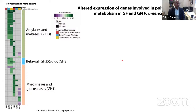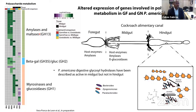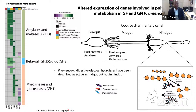At higher resolution, we see amylases, maltases, myrosinases, and glucosidases — which we would typically expect to be expressed primarily in the midguts — actually being expressed in the hindguts as well, which hadn't really been characterized before. This is interesting because it is in the hindgut where members of the Bacteroidetes and Firmicutes tend to be most abundant and are likely contributing to the production of short-chain fatty acids.